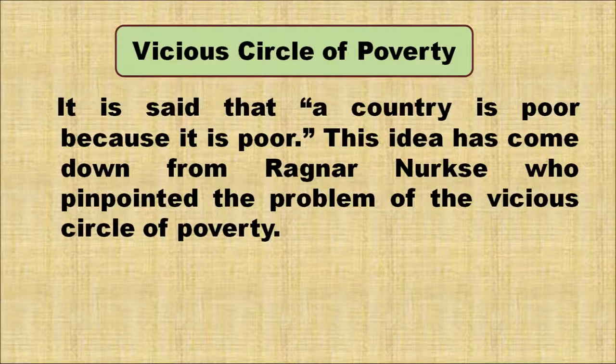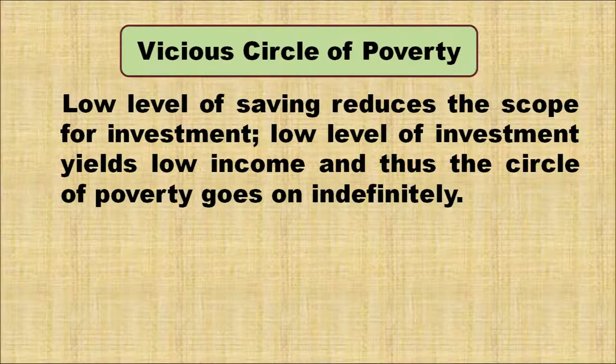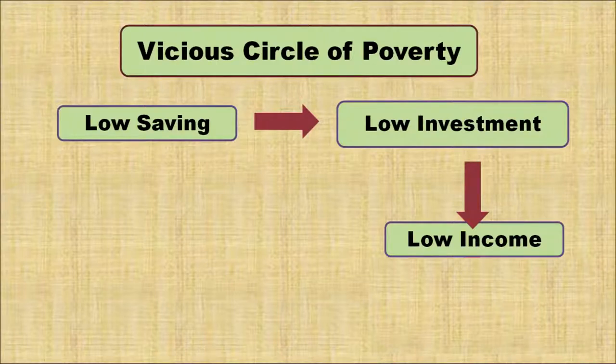The first major reason is the vicious circle of poverty. It is said that a country is poor because it is poor. This idea comes from Ragnar Nurkse, who pinpointed the problem of the vicious circle of poverty. A low level of saving reduces the scope for investment, which in turn results in lesser income, and thus the circle of poverty continues indefinitely. If you are saving low, you invest low; if your income is low, you save even less, and the vicious circle continues.